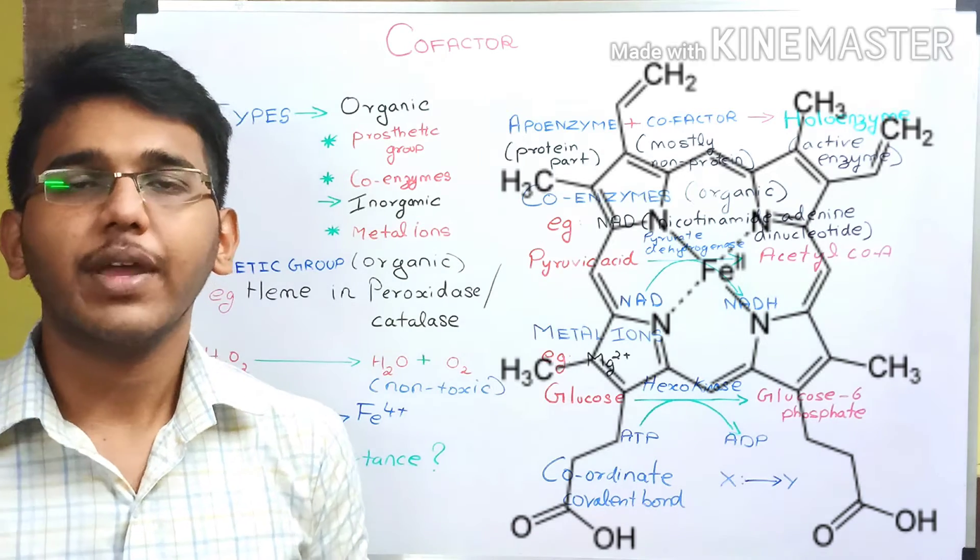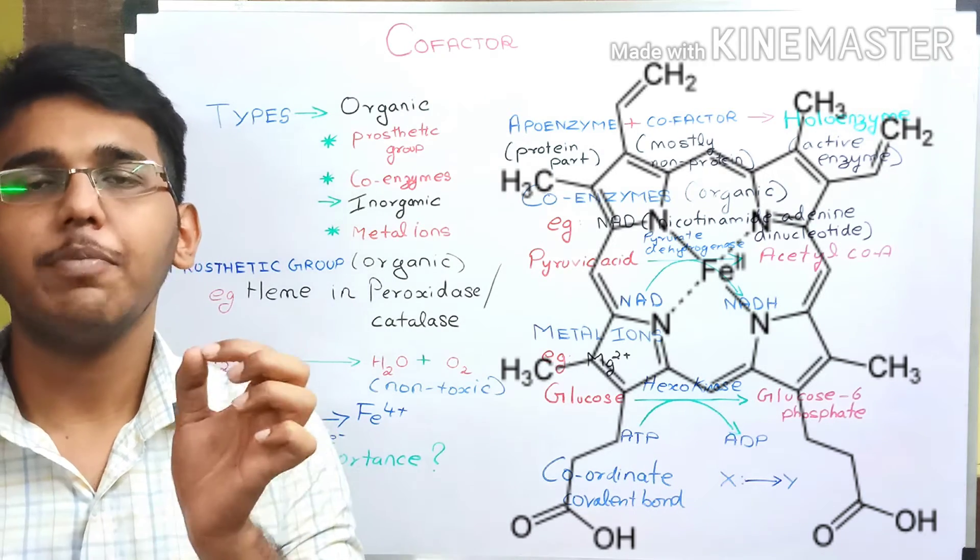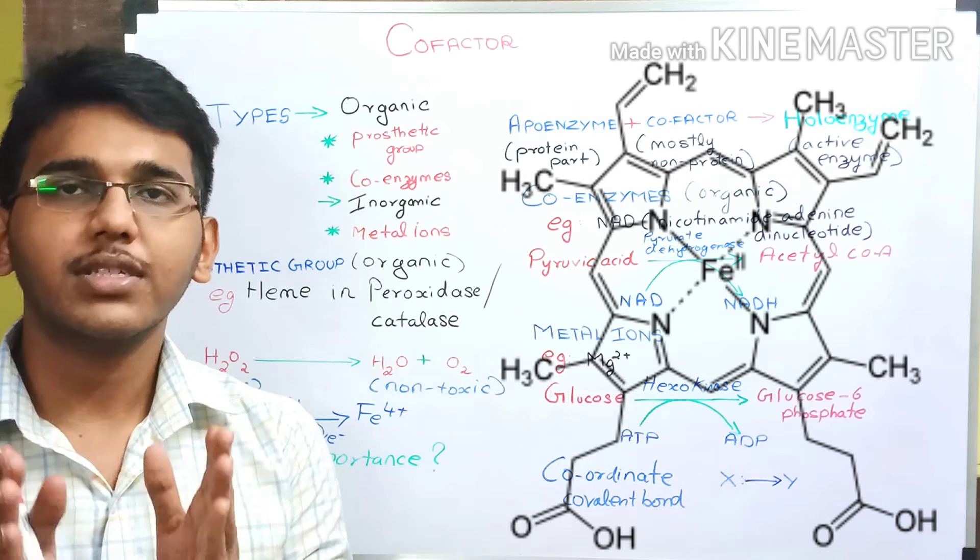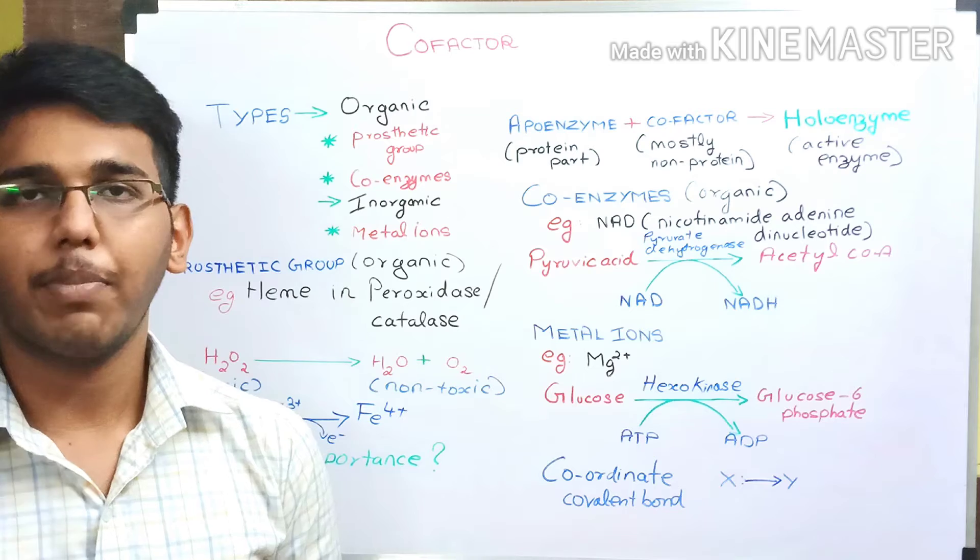If you see the structure of heme group, it contains an Fe3+ ion surrounded by a porphyrin ring. The heme group is nothing but an iron porphyrin complex.